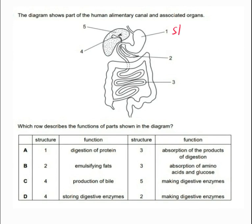Organ 1 is the stomach. Organ 2 is the pancreas. Organ 3 is the small intestine. Organ 4 is the liver. And organ 5 is the gallbladder.